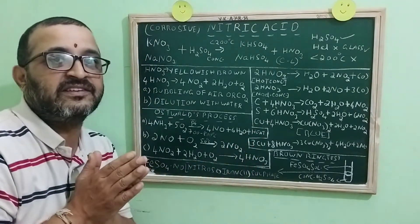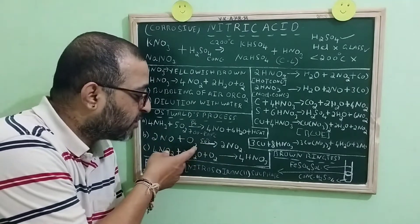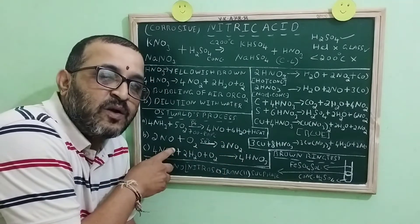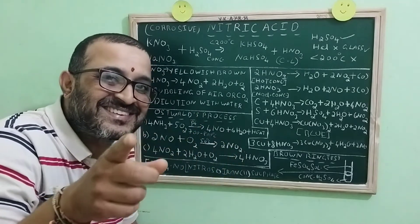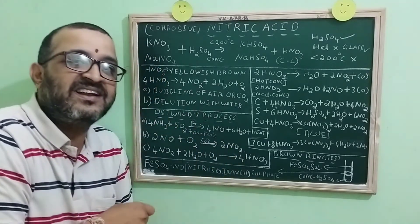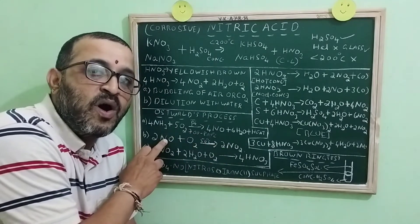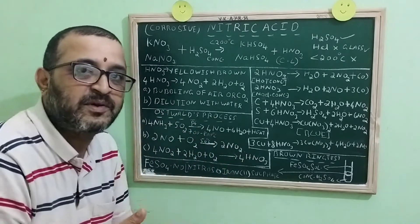Next question arises. How do you know that NO, that is nitric oxide, is further oxidized to NO2? Very simple. Nitric oxide is colorless. Nitrogen dioxide is reddish brown. Change in color indicates that all the nitric oxide is converted to nitrogen dioxide, which is reddish brown.